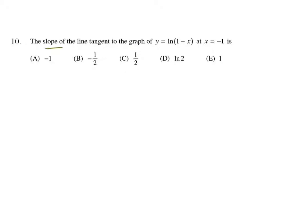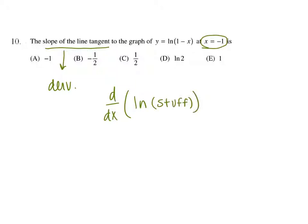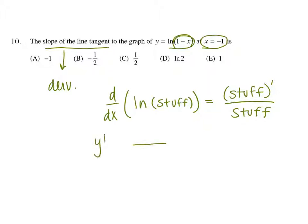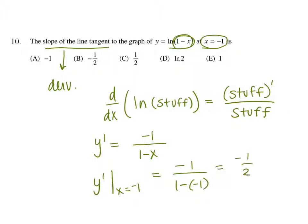For our next problem, we're looking for the slope of the tangent line — that means derivative — evaluated at x equals negative 1. The derivative of the natural log of (stuff) is stuff prime over stuff. Here the stuff is 1 minus x, whose derivative is negative 1. So y prime evaluated at x equals negative 1 is negative 1 over (1 minus negative 1), giving negative one-half. That's answer choice B.